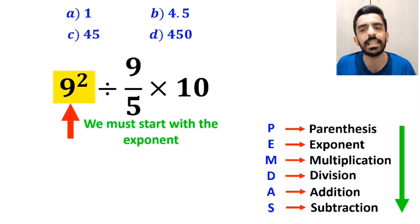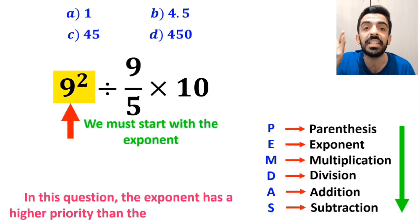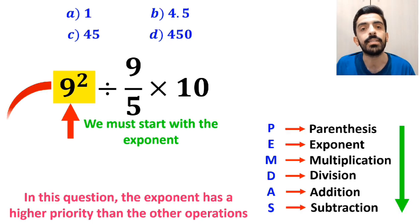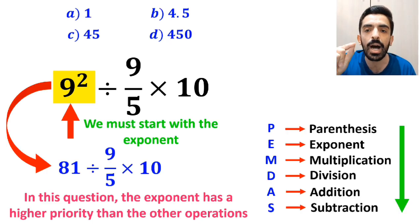Okay, first we must start with the exponent, because in this question, exponent has a higher priority than the other operations. So instead of this expression, we can write 81 divided by 9 over 5 multiplied by 10.